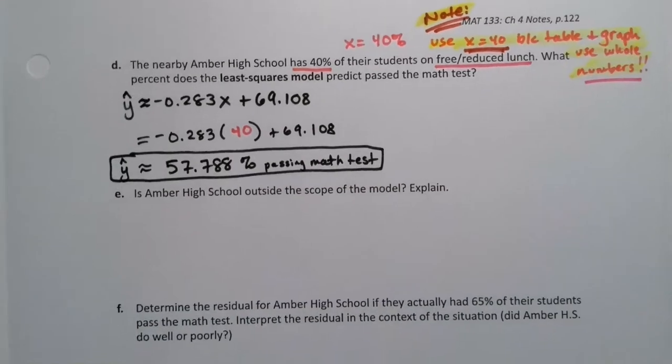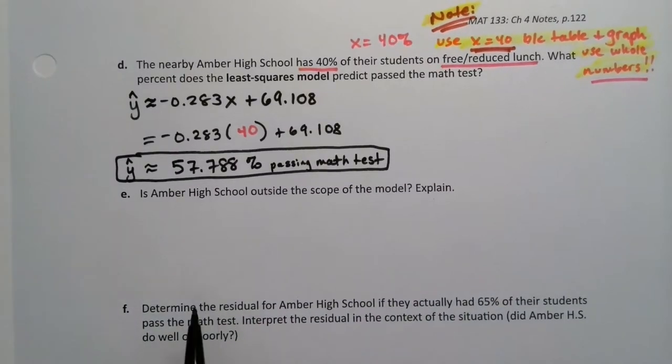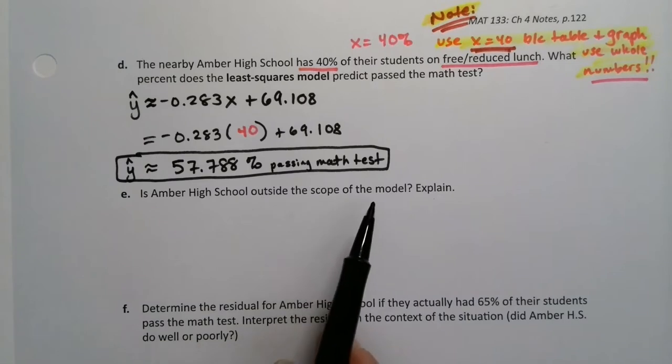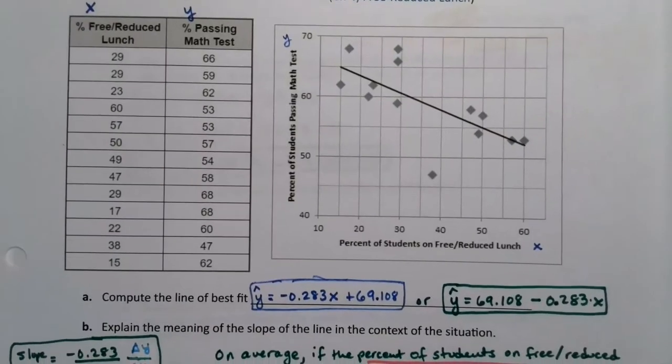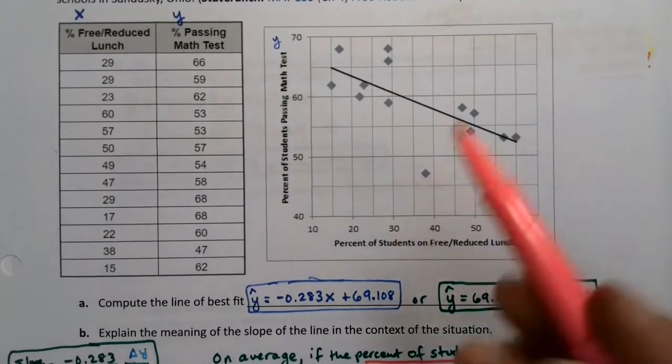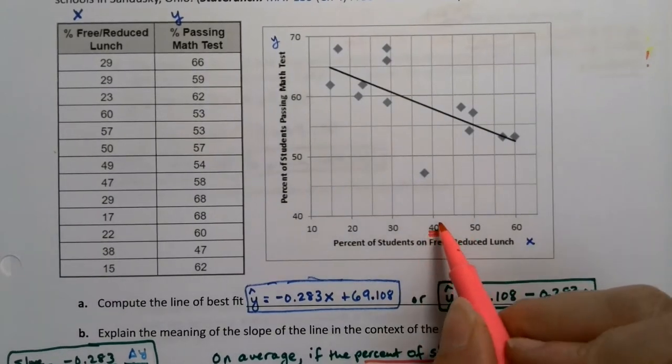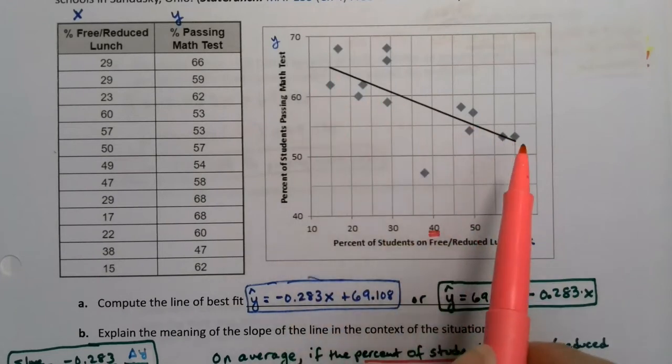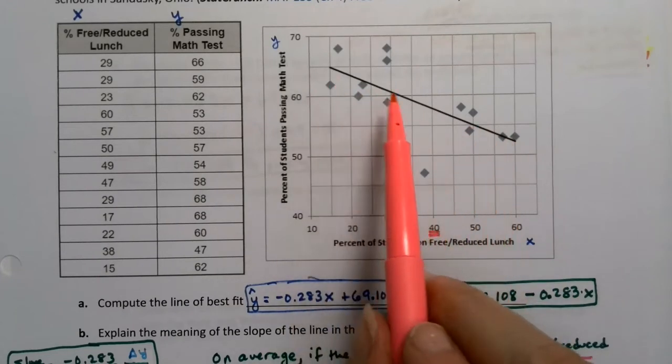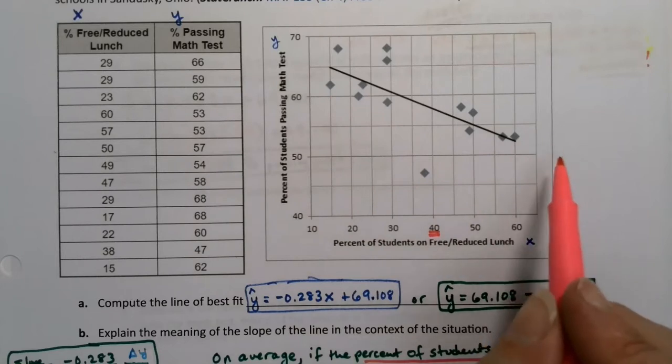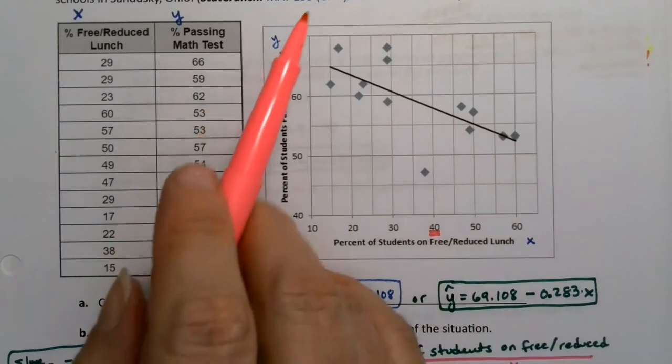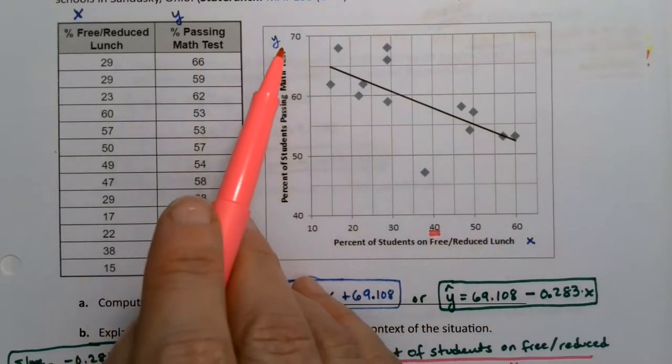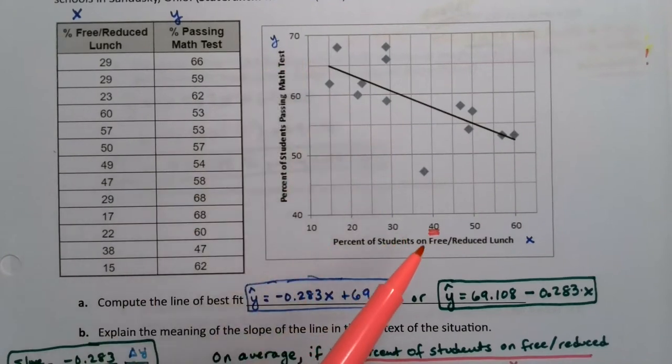Now, is Amber High School outside the scope of the model? Well, let's look back at the model. So here we have our model here. x equals 40 is right here. And that's right in the thick amongst all our data sets. That's interpolation. So no, x equals 40 is not outside the scope of the model. x equals 70 would be outside the scope of the model. x equals 0, we already said the y-intercept is outside the scope of the model. But 40 is not.